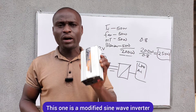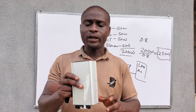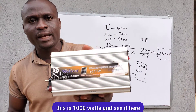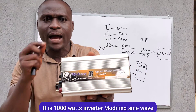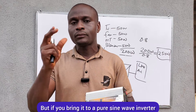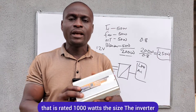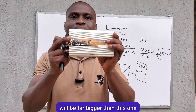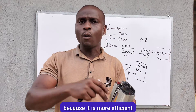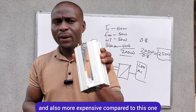This one here is a modified sine wave inverter — you can see how small it is. It is a 1,000-watt, 12-volt modified sine wave inverter. If you bring a pure sine wave inverter also rated 1,000 watts, it will be far bigger than this one — I would not be able to hold it like this. It will be bigger because it is more efficient and also more expensive.